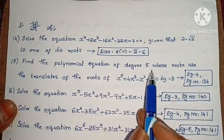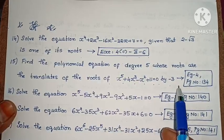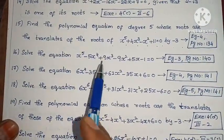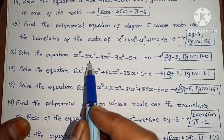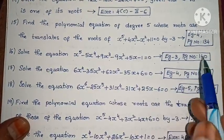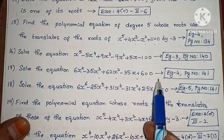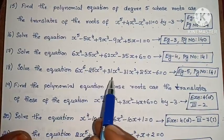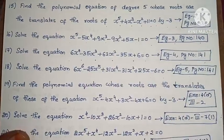Next, find the polynomial equation of degree 5 whose roots are the translates of the roots of x⁵ plus 4x³ minus x² plus 11 equals 0 by minus 3. Example 4, page number 134. Next, solve the equation x⁵ minus 5x⁴ plus 9x³ minus 9x² plus 5x minus 1 equals 0. Example 3, page number 140. Next, solve the equation 6x⁴ minus 35x³ plus 62x² minus 35x plus 6 equals 0. Example 4, page number 141. Next, solve the equation 6x⁶ minus 25x⁵ plus 31x⁴ minus 31x² plus 25x minus 6 equals 0. Example 5, page number 141.